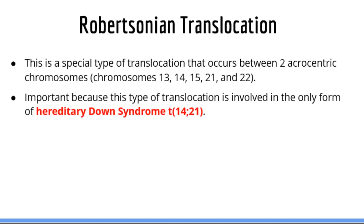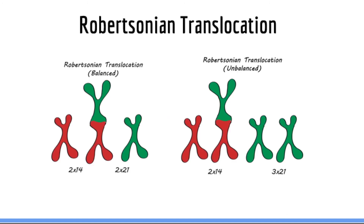Another type of translocation you must also be familiar with is Robertsonian translocations, because there is a specific type associated with hereditary Down syndrome. A Robertsonian translocation is a type of translocation that occurs between acrocentric chromosomes. The acrocentric chromosomes are chromosomes 13, 14, 15, 21, and 22. They are called acrocentric because the centromere, or the center of the chromosome, is very close to one end of the chromosome. In a Robertsonian translocation, two acrocentric chromosomes become attached to each other. The Robertsonian translocation associated with hereditary Down syndrome is a 14;21 translocation.